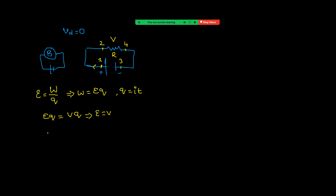The energy lost across the resistor is V × Q. Substituting Q = I × t and I = V/R, we get the energy lost as V²t/R. Equivalently, substituting V = IR gives I²Rt. So the energy lost across the resistor equals VIt = V²t/R = I²Rt.